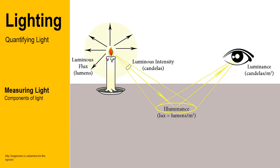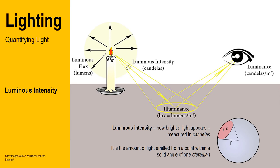Lighting levels and the perception of light is based on a number of components that are part of the light emitting element itself, as well as the way it is perceived as a consequence of the surfaces the light reflects off. The basic measure of the amount of light emitted from a light source is luminous intensity — this is how bright the light appears.